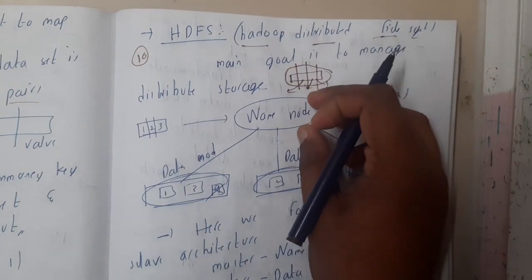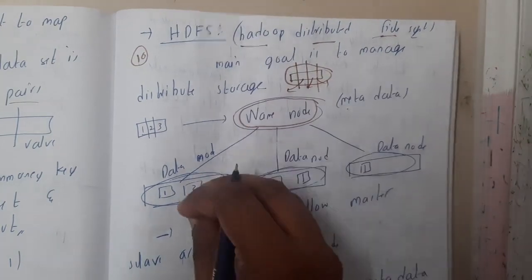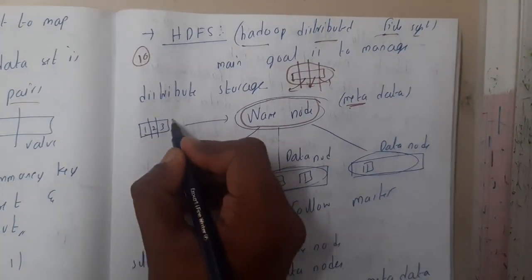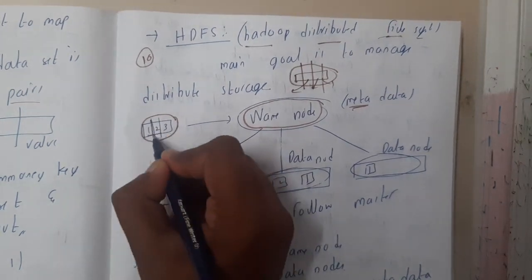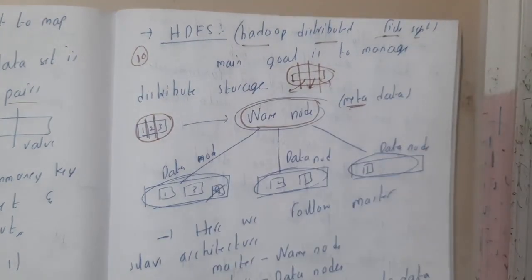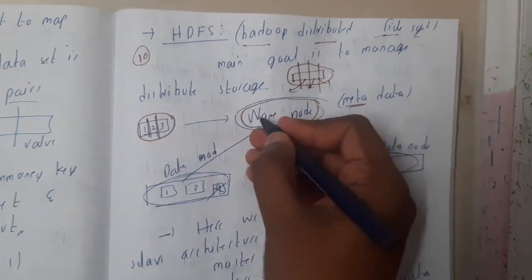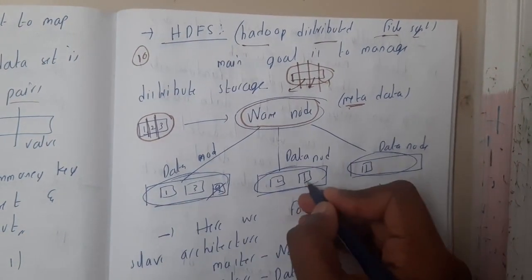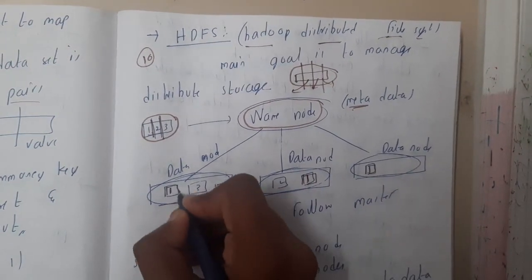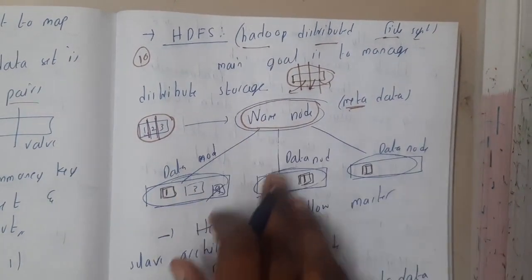Here we will be having name nodes and data nodes. Name nodes will contain metadata — data about the data. Assume we have a huge dataset which we divide into three different chunks. The name server observes the packets: the first packet is pushed into three nodes, making multiple copies since it is considered really important.